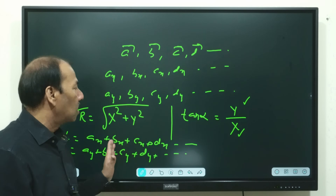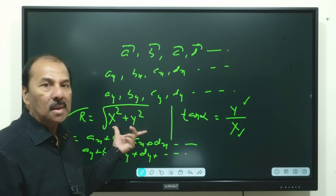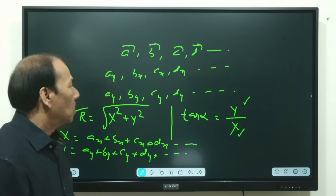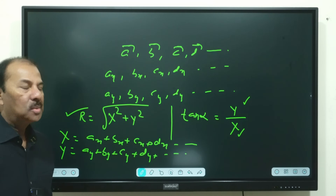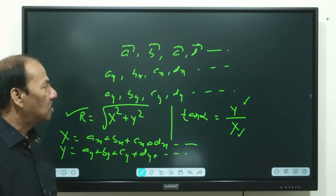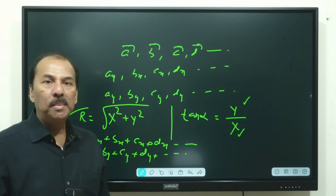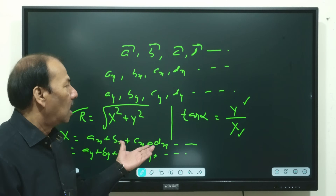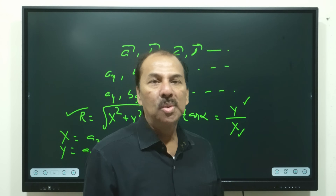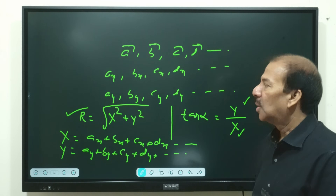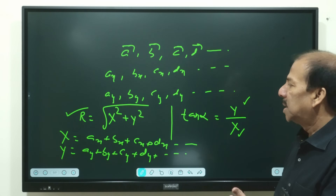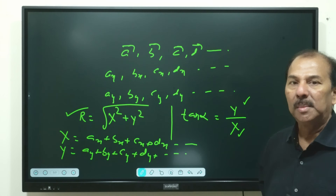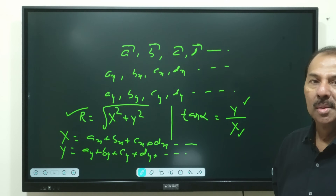So get the x-component, y-component, find the resultant using √(x² + y²), and find the angle using tan α = y/x. In the next video we will discuss problems on vectors, since we have now covered addition of vectors, resolution of vectors, and position vectors. Thank you.